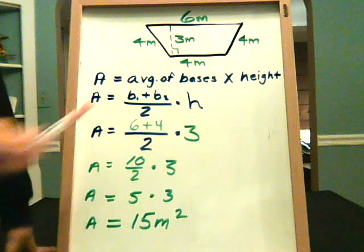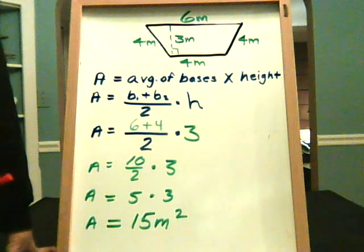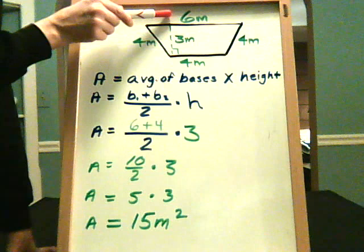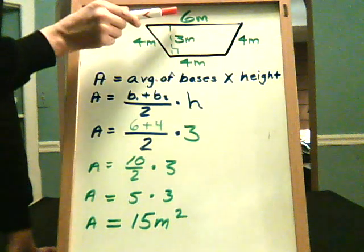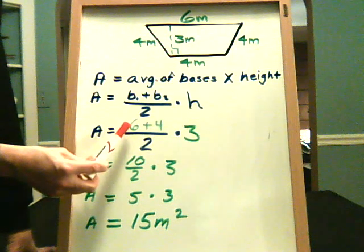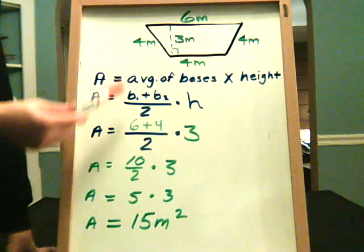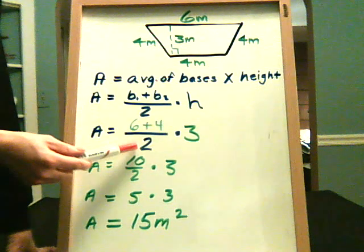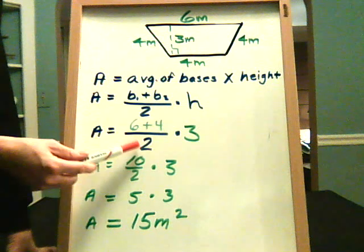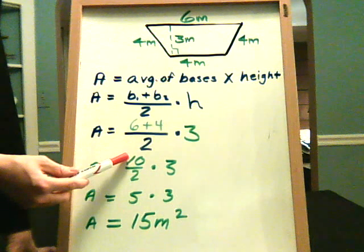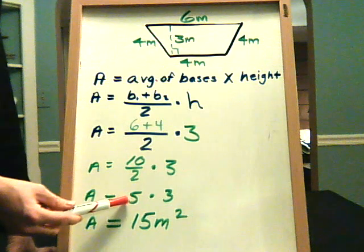Okay, so now average of the bases. Well, formally that means you take your one base and your second base, so b₁ and b₂, so we substitute them in here, 6 plus 4, you add them together, and then you divide by the number of numbers, so 2. So 6 plus 4 divided by 2, 6 plus 4 gives us 10, divided by 2 gives us 5.